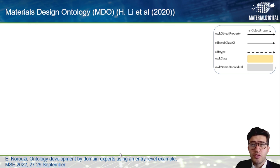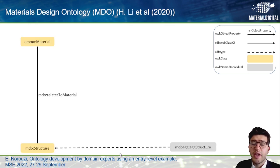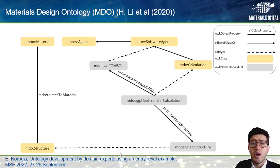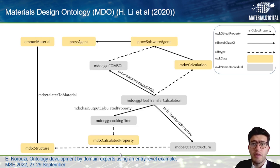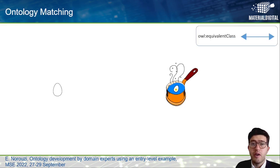Materials design ontology is used in computational material science. Here, an expert wants to use COMSOL simulation to calculate the cooking time using heat transfer calculation.